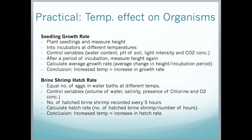For the second practical — the effect of temperature on the hatch rate of brine shrimp — we take an equal number of eggs and put them into water baths at different temperatures. We must control variables such as the volume of water, salinity, presence of chlorine if using tap water, and O2 concentration. Every 5 hours, we record the number of hatched brine shrimp. This allows us to calculate the hatch rate by dividing the number of hatched brine shrimp by the number of hours, which we can then plot on a graph. If increasing temperature corresponds to an increased hatch rate, this gives us the conclusion of the experiment.